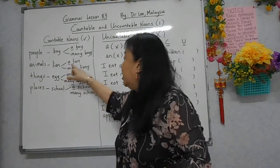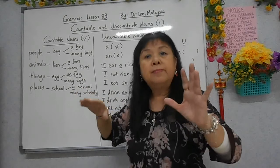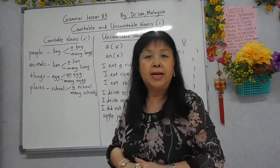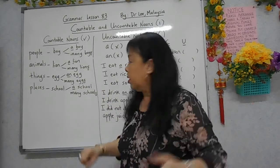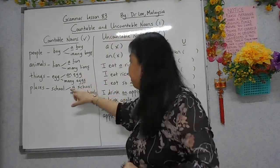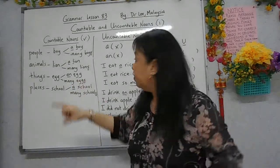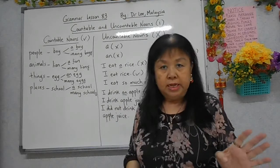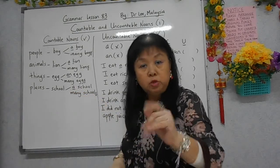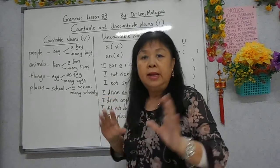Kalau benda, orang, binatang, dan tempat banyak, kita mesti tambah S di belakang. Faham? Things, benda, contoh telur. Kalau sebiji telur, 'an egg'. Sebiji telur. Banyak biji telur, boleh kira — many eggs. Jadi, orang, binatang, tempat, dan benda, kalau banyak, mesti ada S di belakang. 'A school' — sebuah sekolah. 'A' sebab S bukan a, e, i, o, u. Jadi, gunakan 'a' untuk menunjukkan sebuah sekolah. Kalau banyak sekolah, boleh kira. Banyak boleh kira — many schools.